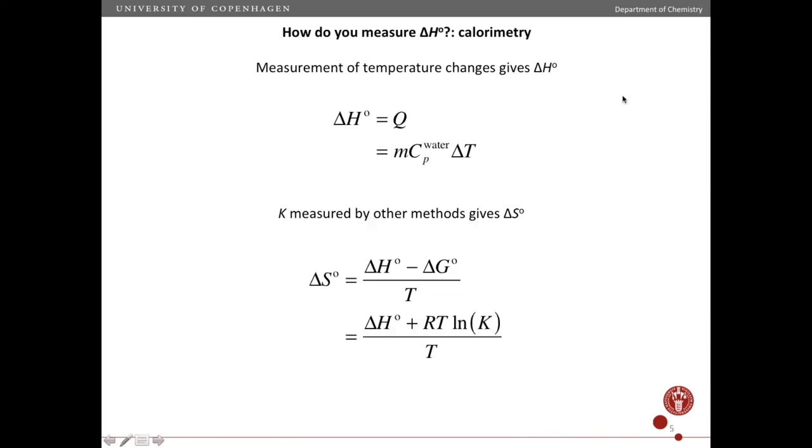So that summarizes how we get the enthalpy. If we also want the entropy, then that's usually gotten by measuring the equilibrium constant by some other method that we've talked about in previous videos. And from that we can get delta S standard. We translate the equilibrium constant to a free energy change, a standard free energy change. We know the enthalpy from calorimetry. We know what temperature we've done it at, and so then we can get delta S from this.